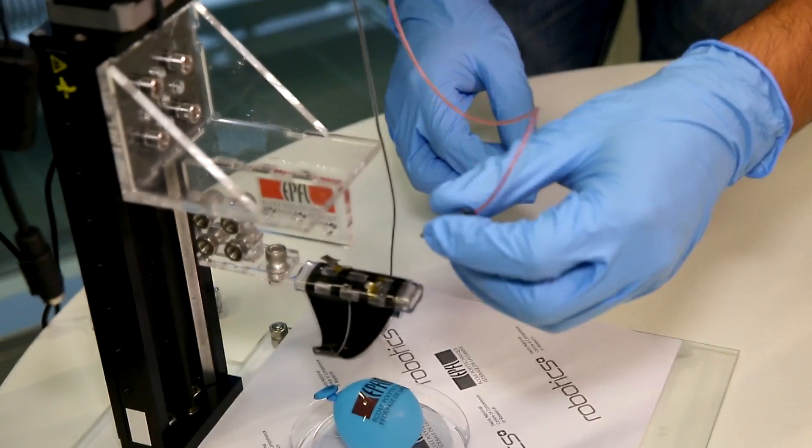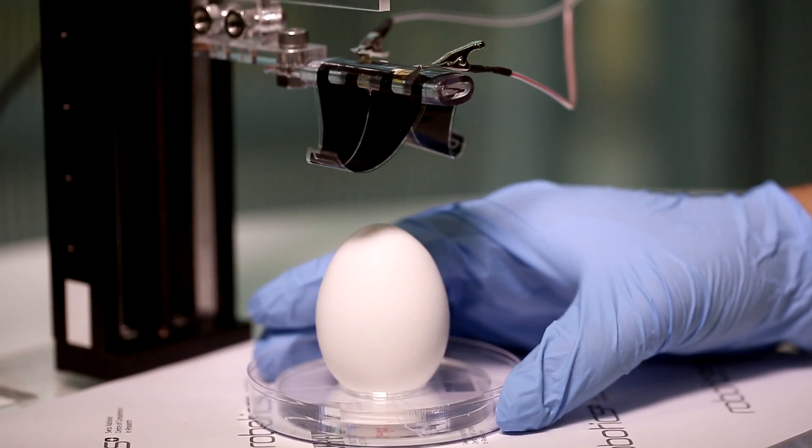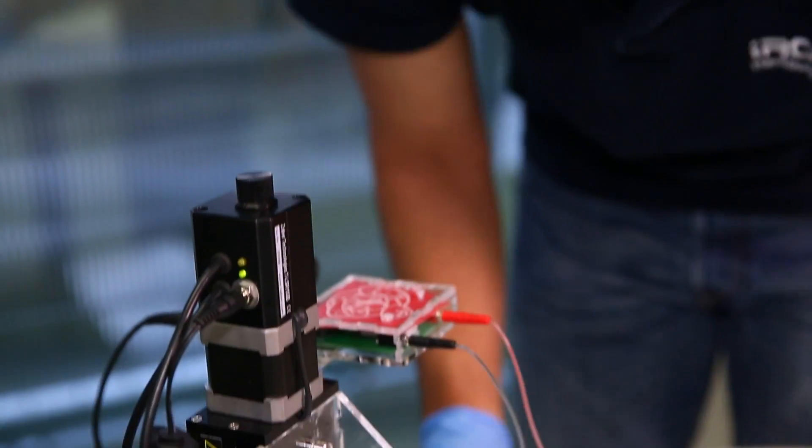We can imagine it being used in humanoid robot hands, an artificial hand for a robot companion, could also be used in the food industry, could even be used in space to catch debris.